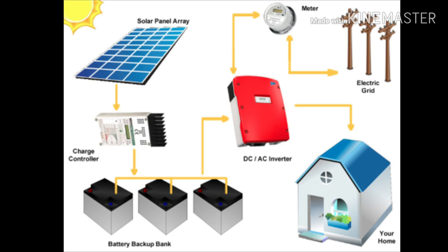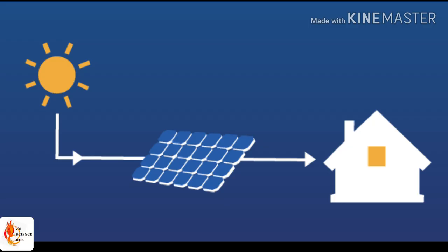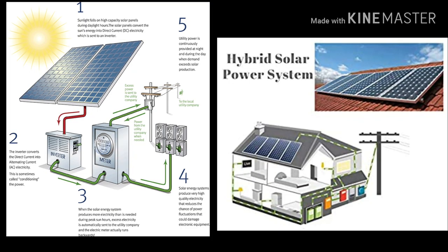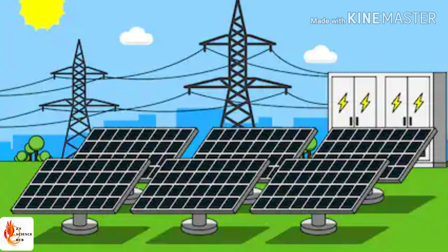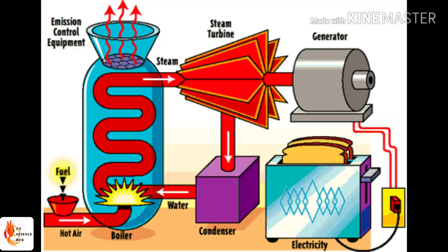Photovoltaic cells utilize the energy of sunlight to produce electricity. Direct current is generated from stationary solar panels, which are made up of photovoltaic cells, and is commonly used for local applications.